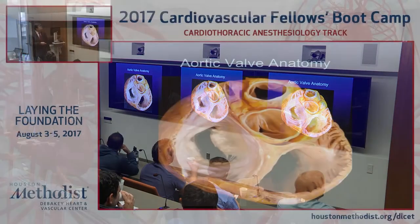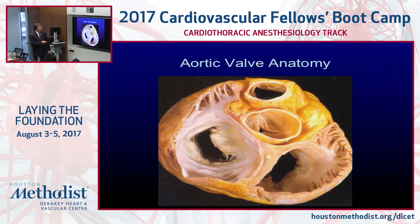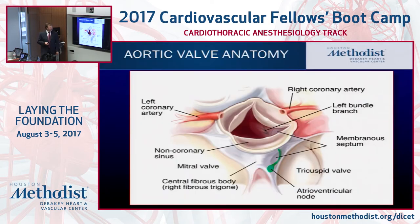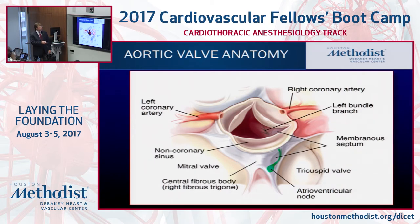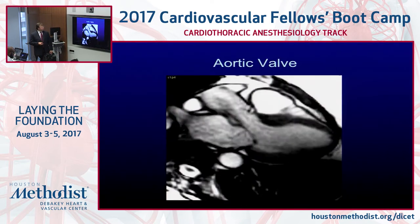This shows the proximity between the mitral valve and the aortic valve. We talked about the orientation at length yesterday. A couple of things to point out: we talked several times about the bundle branch, the bundle of His, and the AV node. Here's the triangle of Koch and where the tricuspid valve is — that's where the bundle runs. It's not green like that in real life, but if you know where it is, you're less apt to injure it.